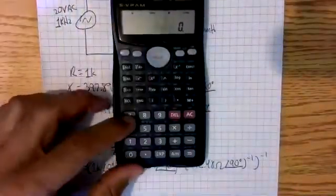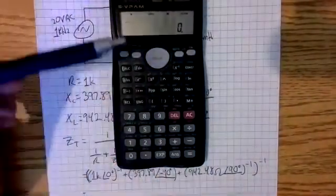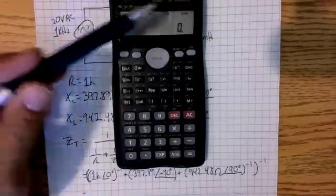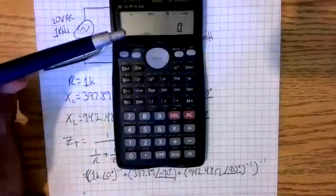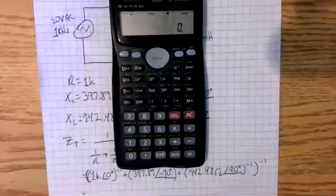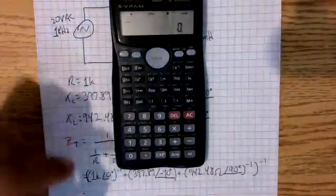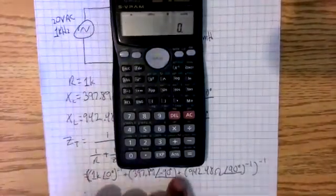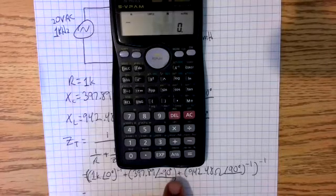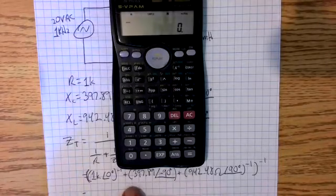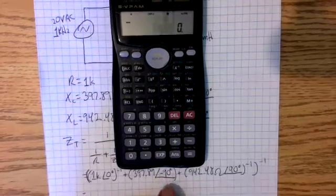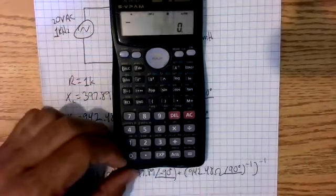So first, we make sure our calculator is in complex mode. I like to work in polar, so I have it in polar. What I do is, I make sure each one of these is enclosed in brackets. So we make sure we take the reciprocal of the entire value, not just the reciprocal of the angle. That's why we need brackets.